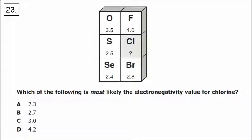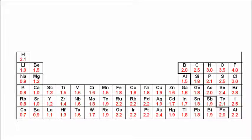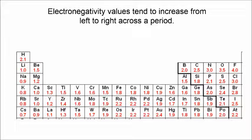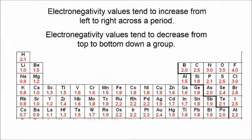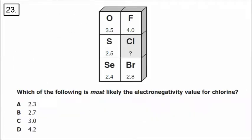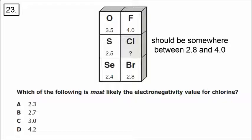Number 23: you don't have to memorize electronegativity values, but you should know the general trend — how it changes going across a period from left to right, and going down a group from top to bottom. Electronegativity values tend to increase from left to right across a period and decrease from top to bottom down a group. For the question mark where chlorine is, the value should be somewhere between 2.8 and 4.0 based on the vertical trend. The correct answer is C, 3.0.